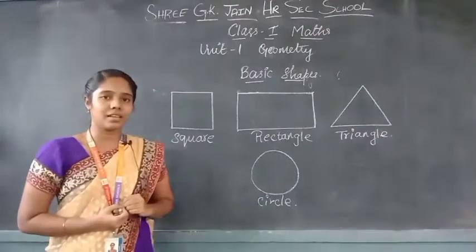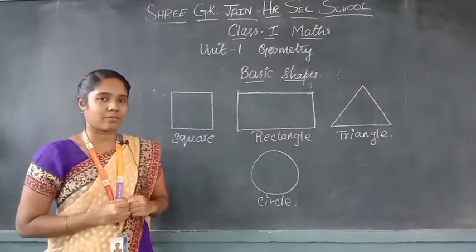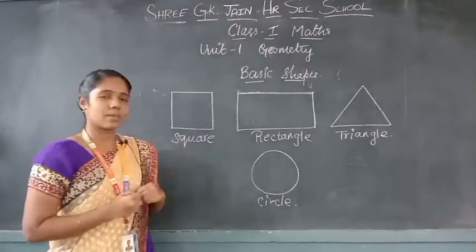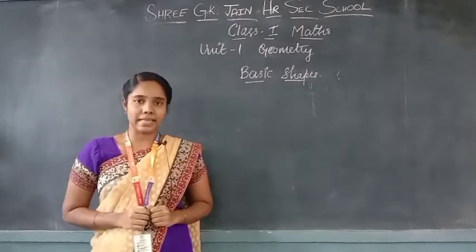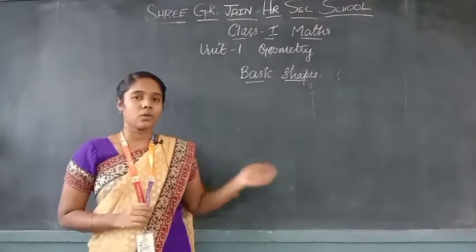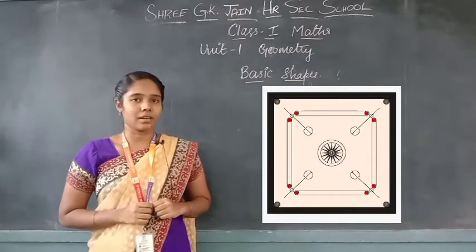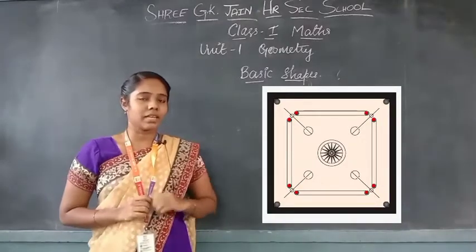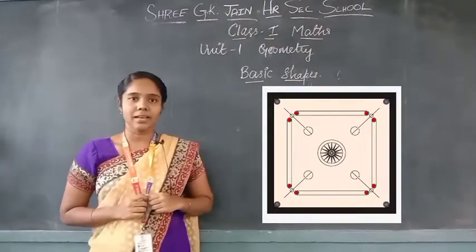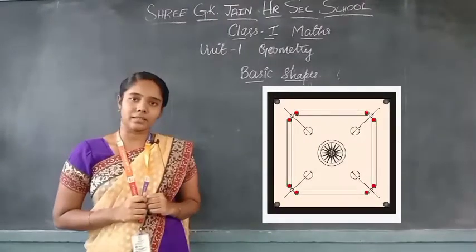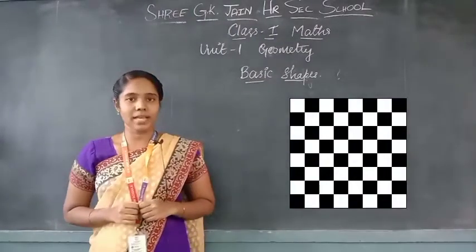You now know the names of the basic shapes. Each shape has an example in our real life. Now let us see the examples. Look at the picture — it is a carrom board. What shape does a carrom board have? It is a square shape. Carrom board is an example for square. Also, a chess board is an example for square.